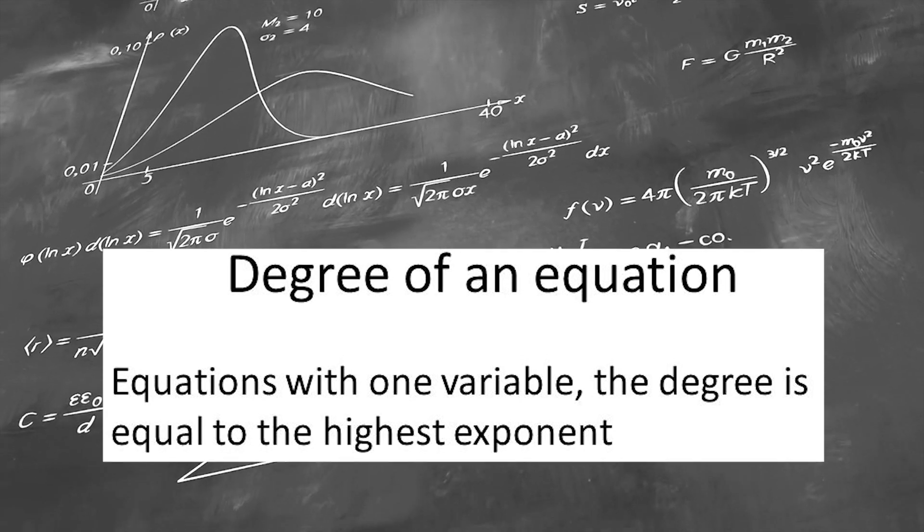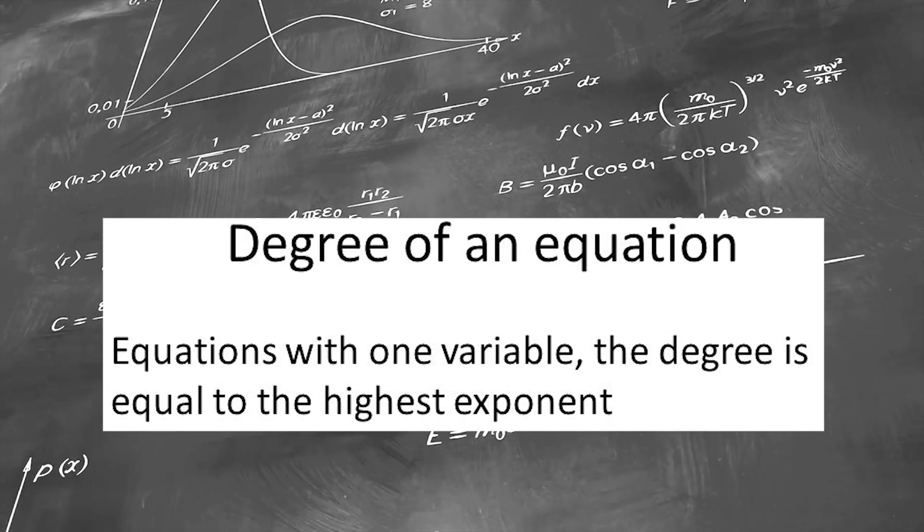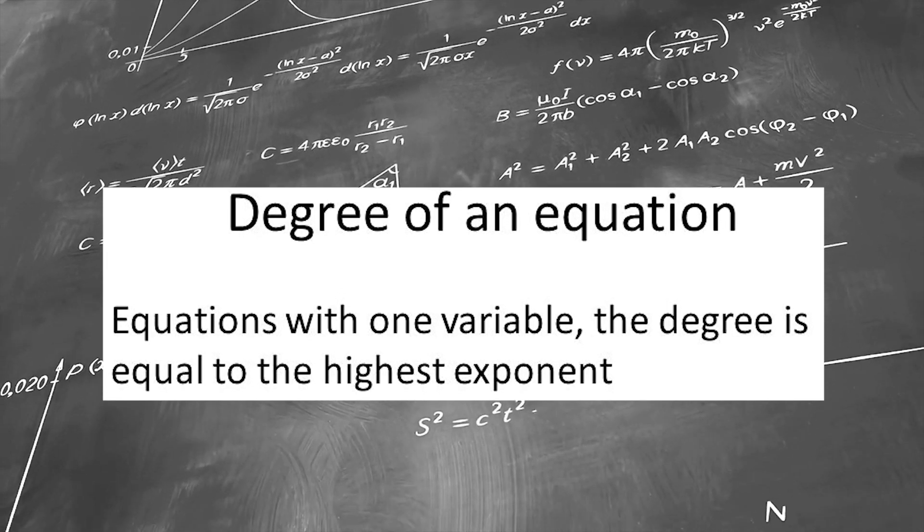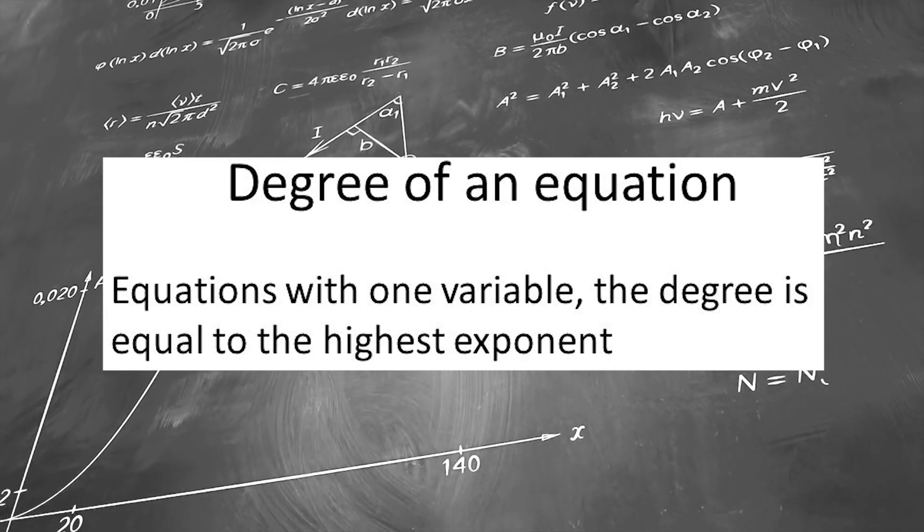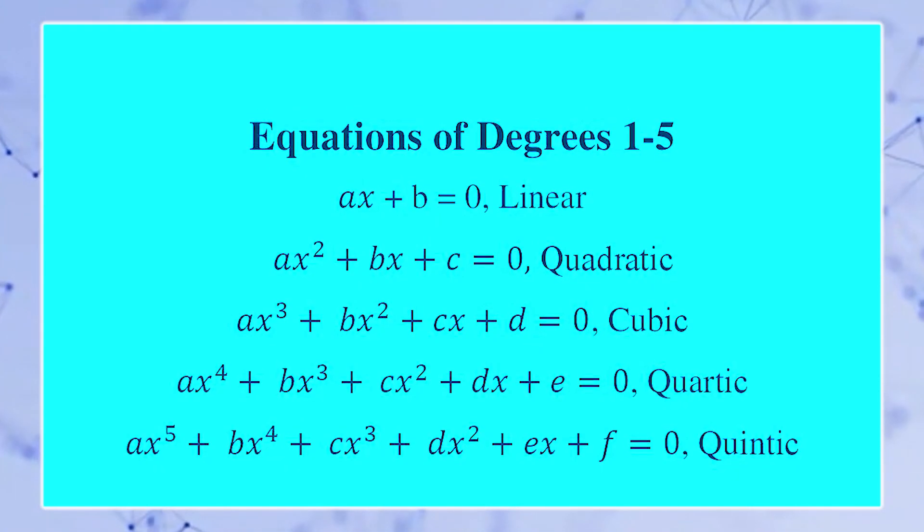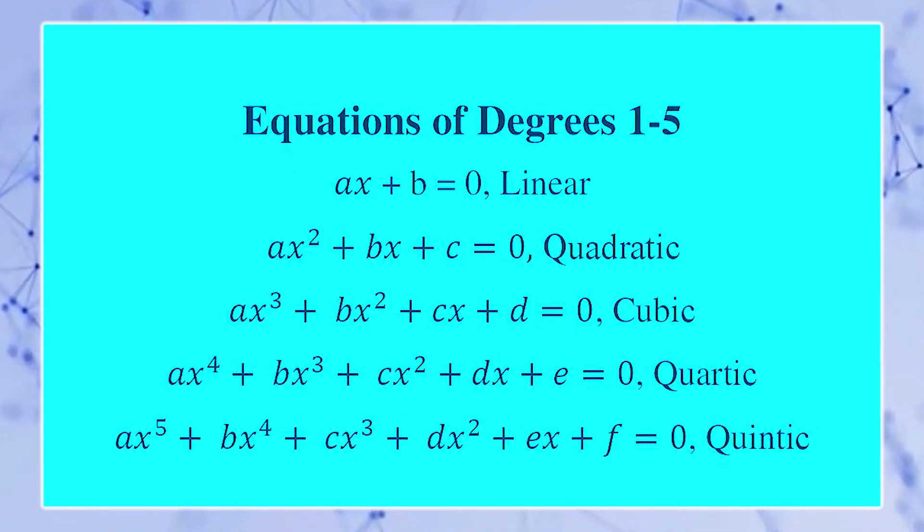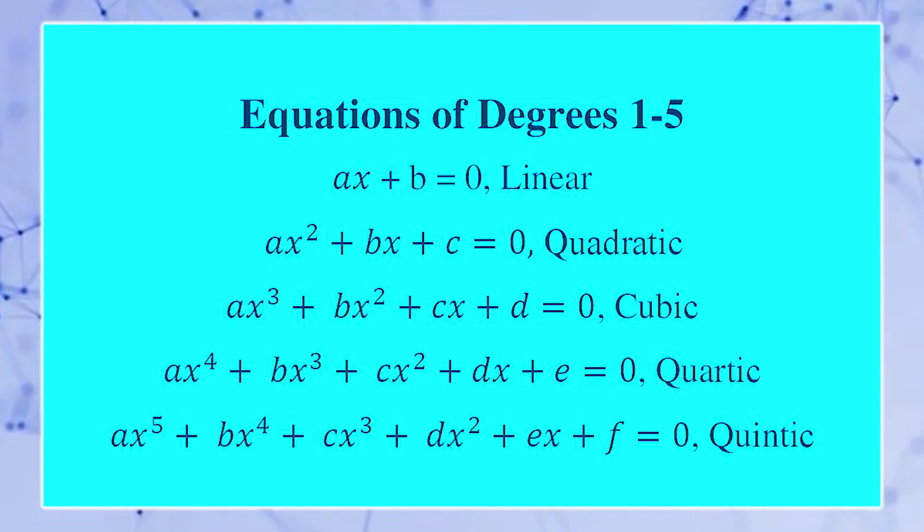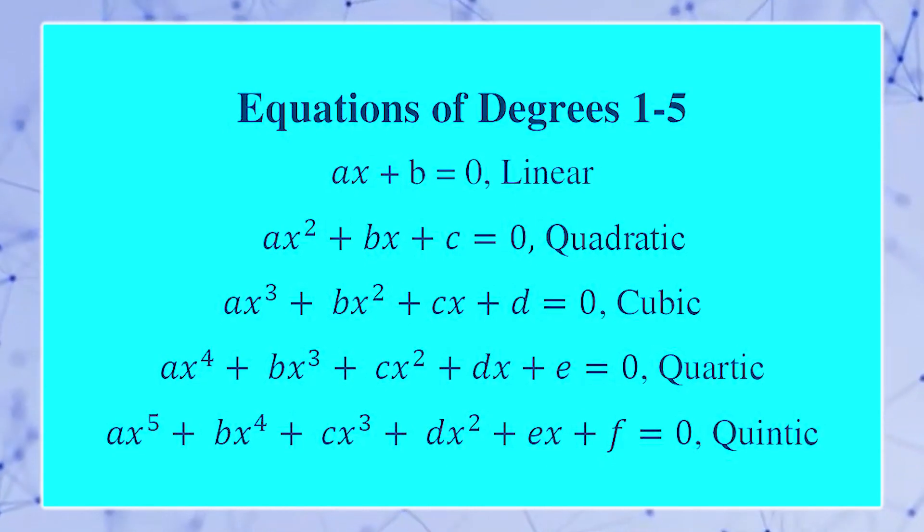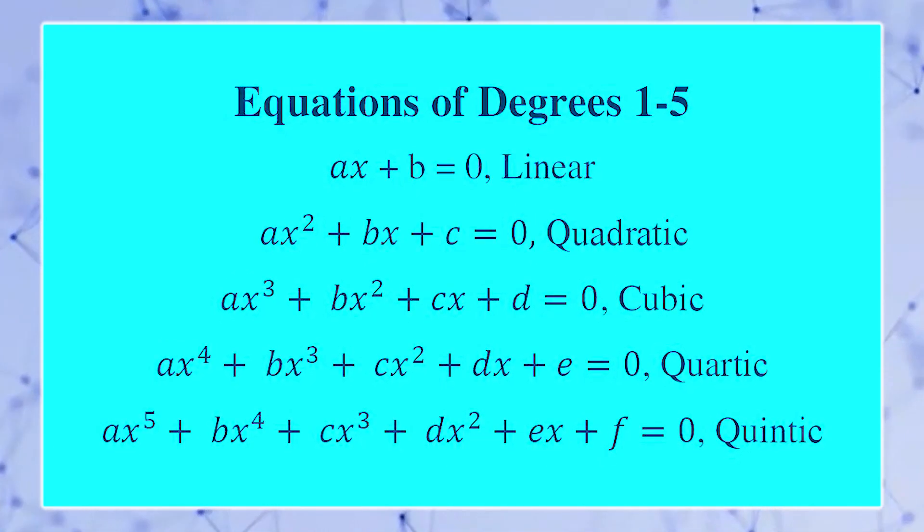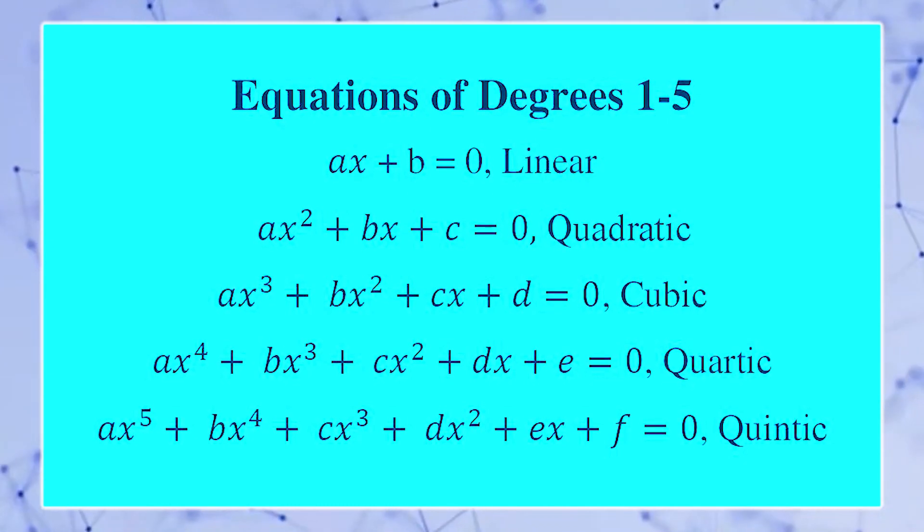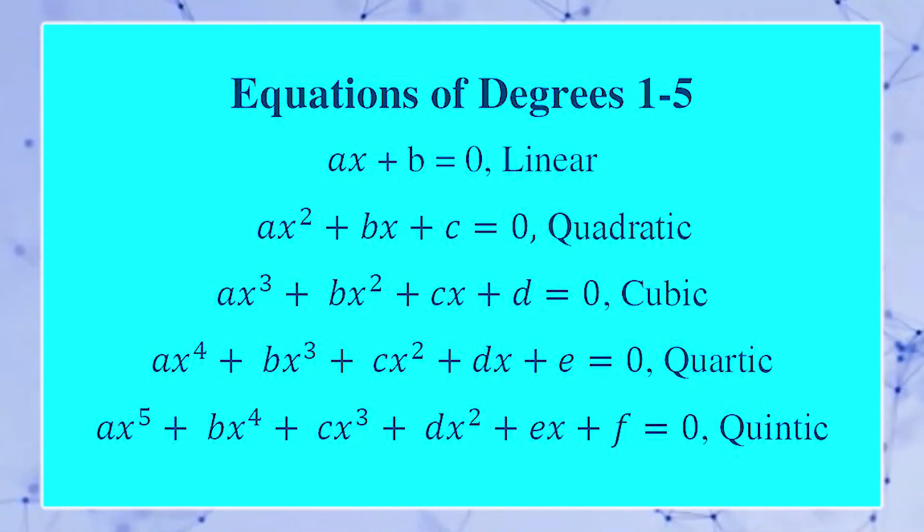The highest power of the unknown variable X in equations is called the degree of that equations. Equations of degree 1 to 5 are called linear, quadratic, cubic, quartic, and quintic equations. The story of classical algebra is the story of finding the values of these five equations.